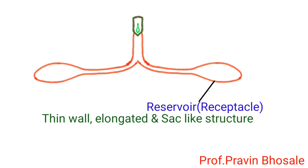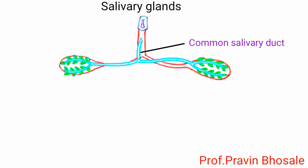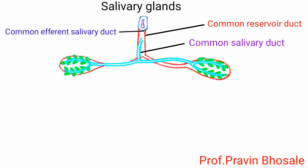The reservoir, or receptacle, of each salivary gland is a thin-walled, elongated sac-like structure. Each receptacle has a duct, and these ducts unite to form a common reservoir duct. The common salivary duct and common reservoir duct unite together to form a common efferent salivary duct. The efferent salivary duct opens at the base of the tongue, or hypopharynx.